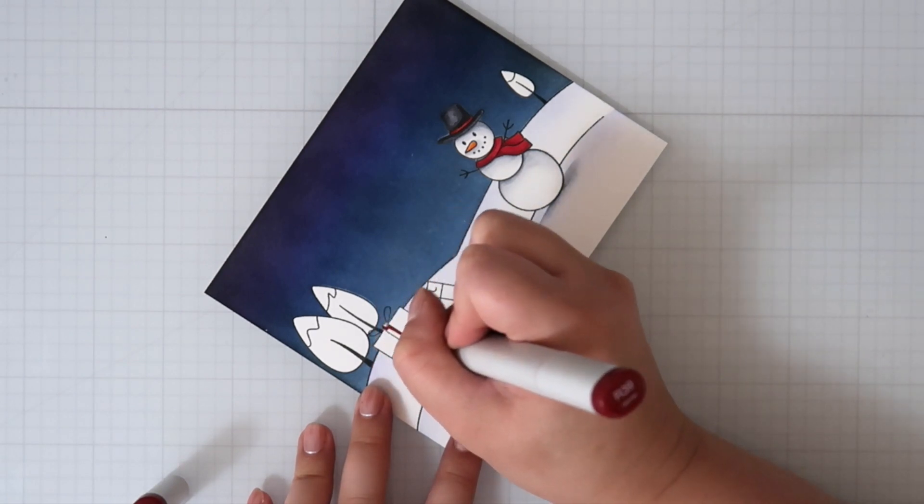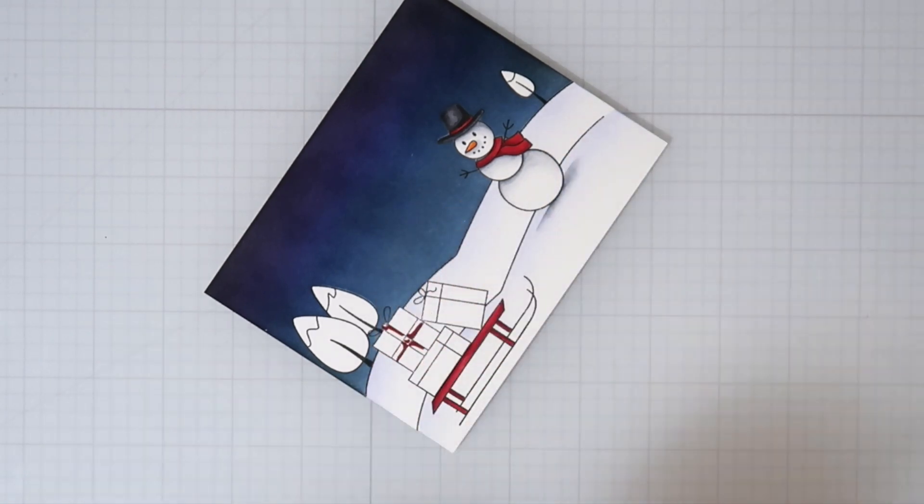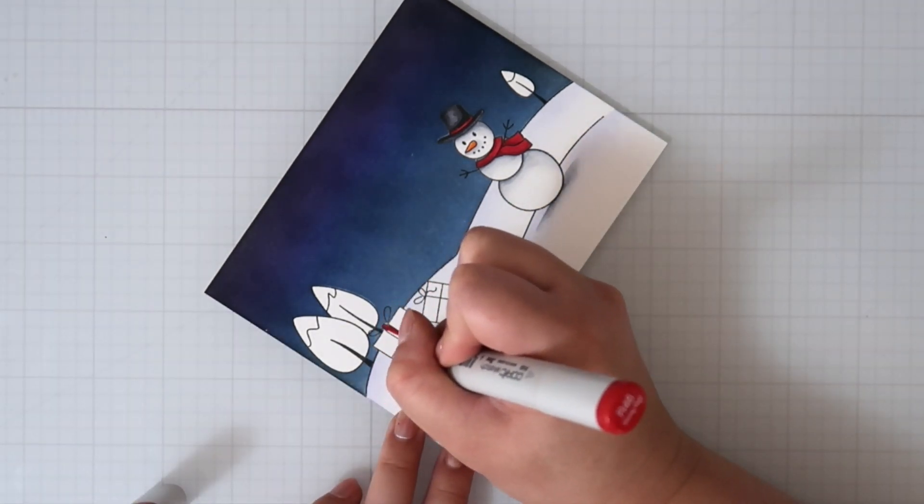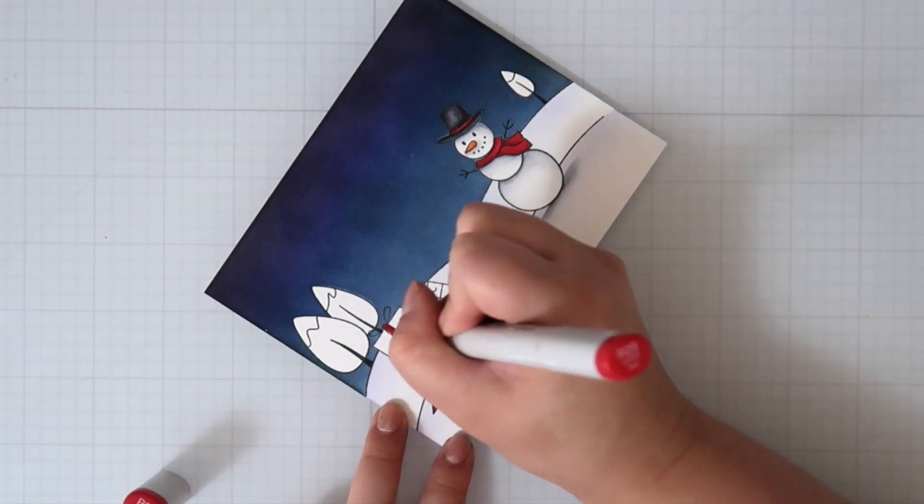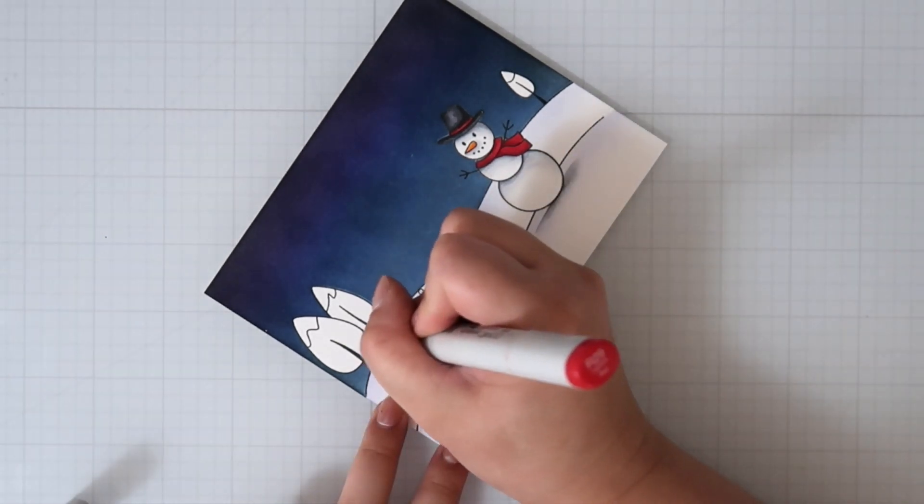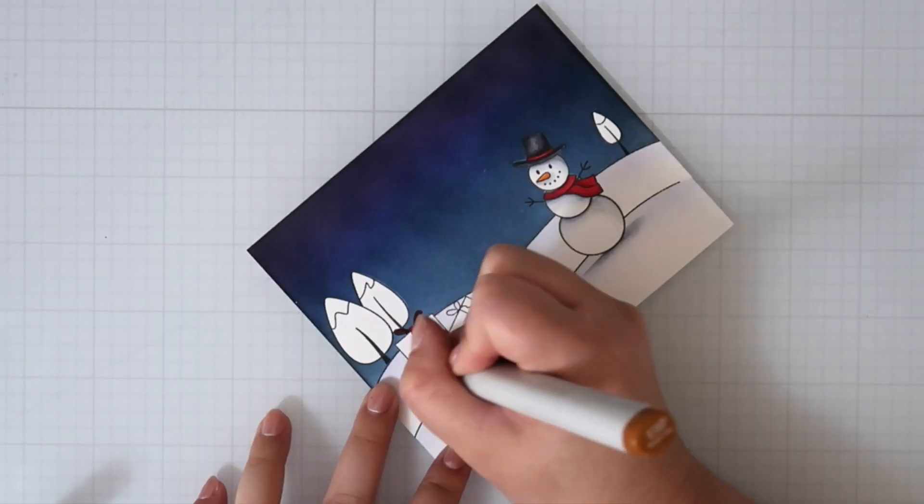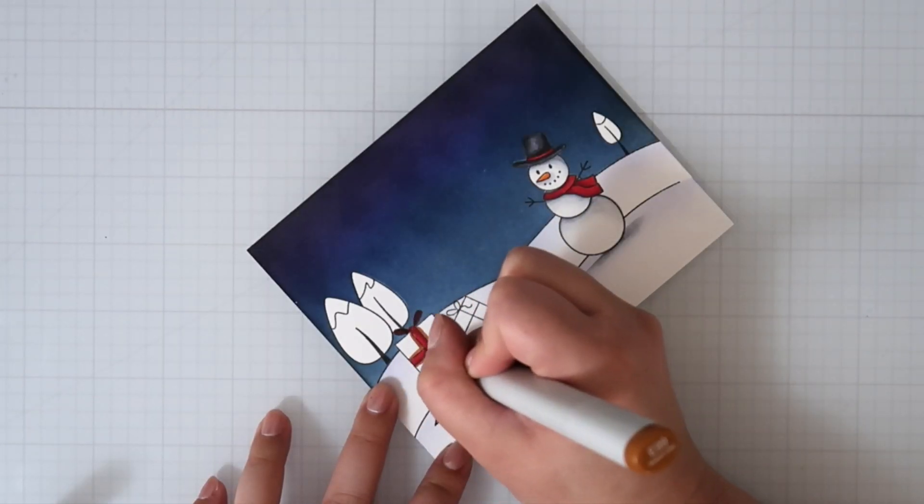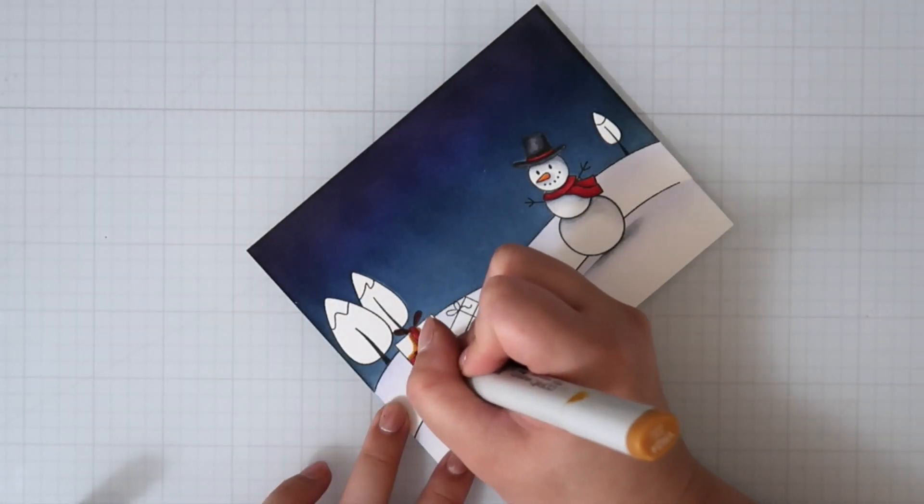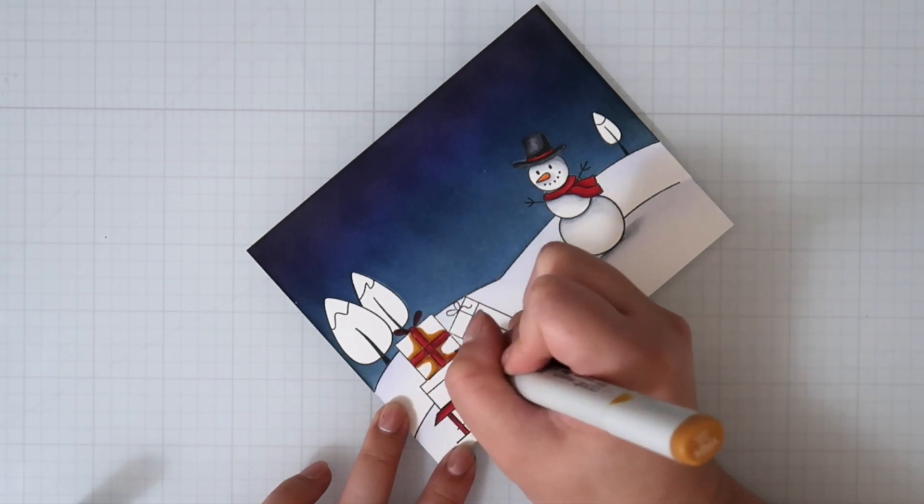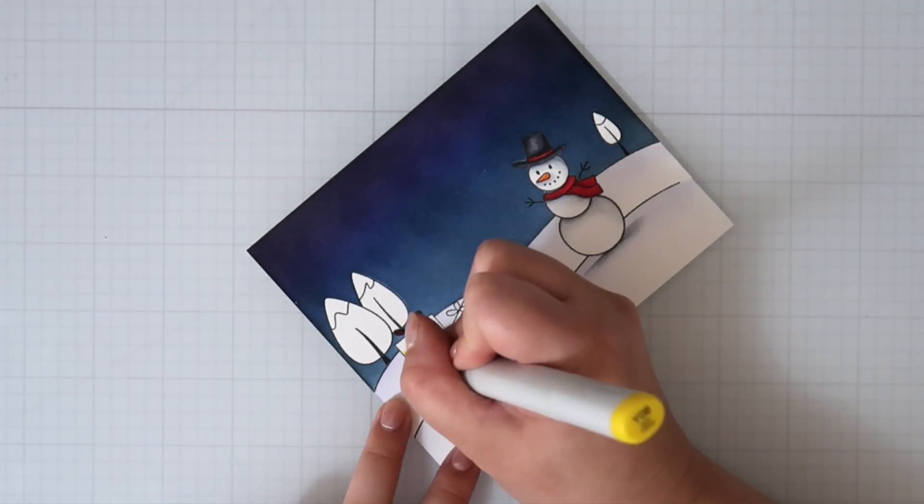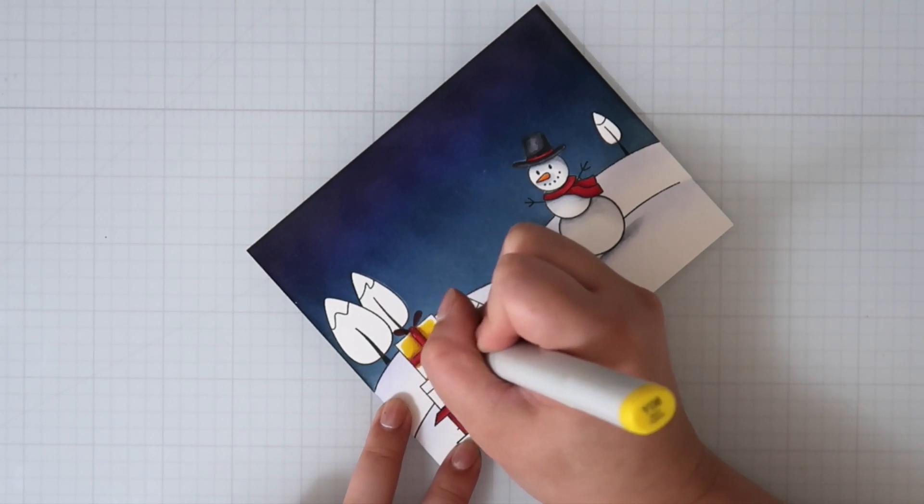I also colored the sled and the present red. I tend to try to use the same colors throughout a card to make it look cohesive. Along with red, I thought gold would look good. Yellow is so tricky for coloring, so my combination that I usually use to get a gold color is E99, YR24, Y08, and Y02. It works really well.